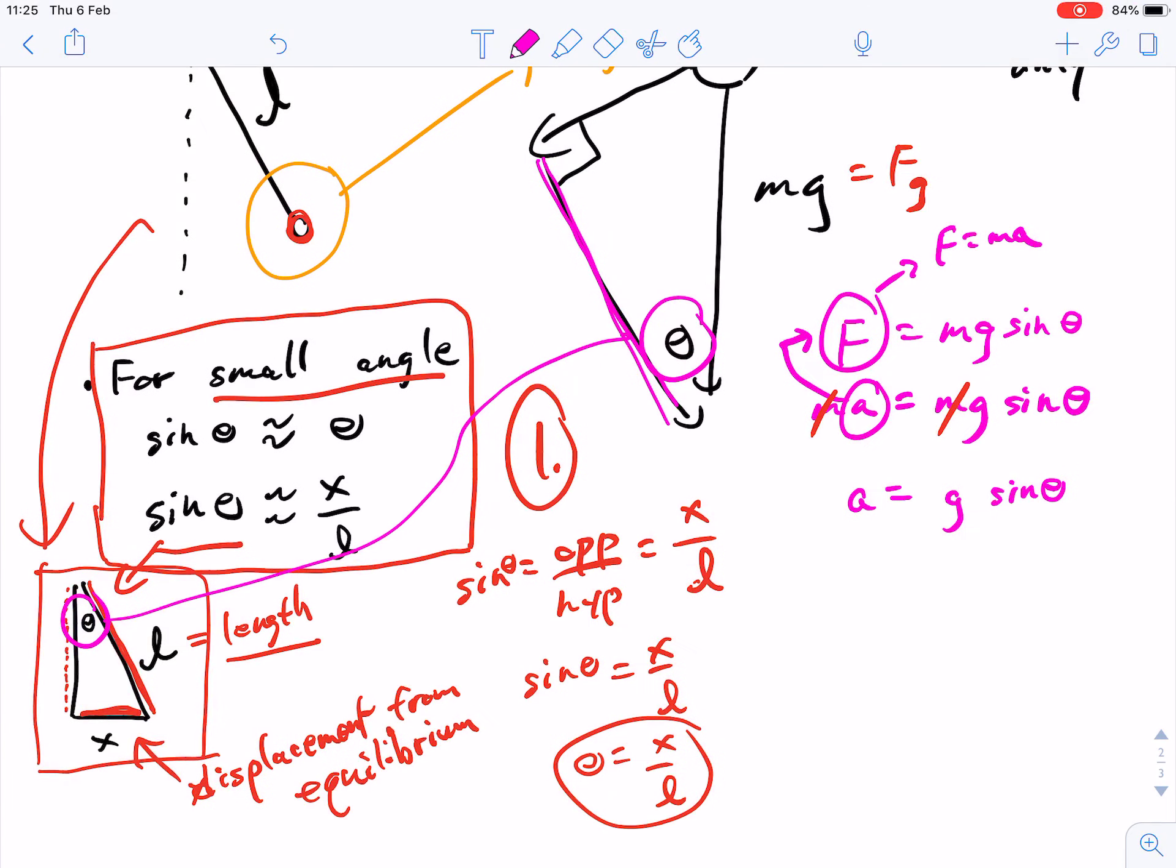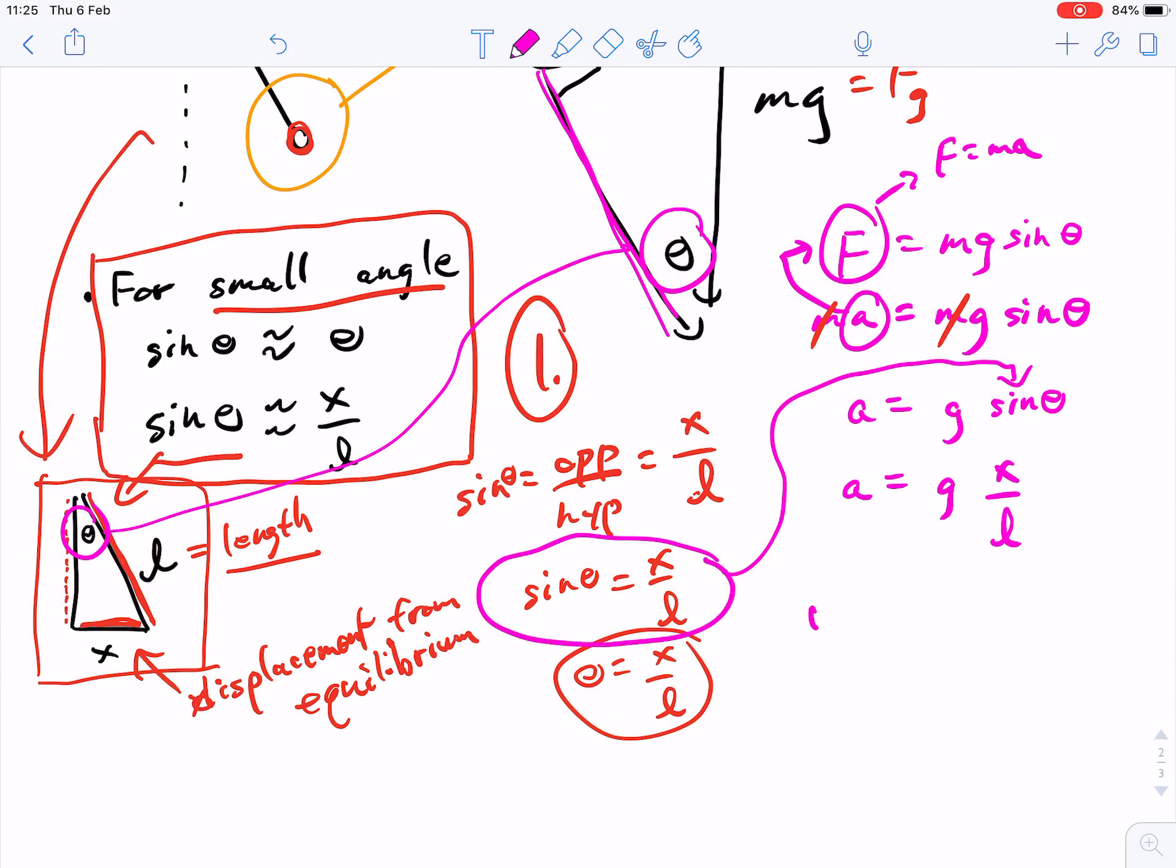And our next step now is to take this piece right here and replace that. So I'm just going to cancel out that first. And we're going to keep going. So a equals g, I guess we'll just shout out the error here, is x over L. And at this point, we are going to bring in our angular frequency. So a, the acceleration, is w squared x, g x over L.